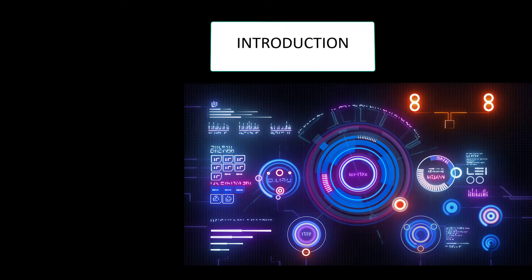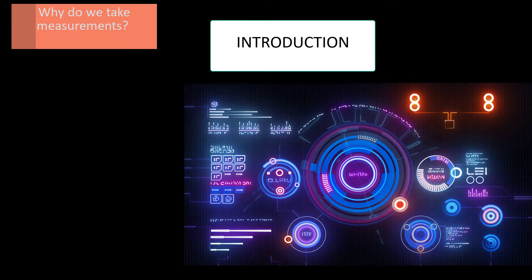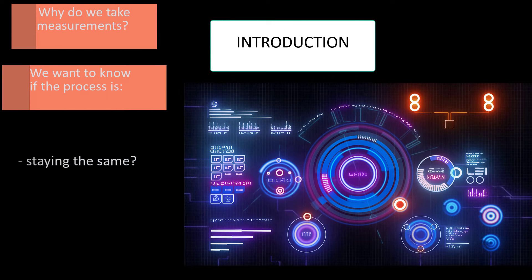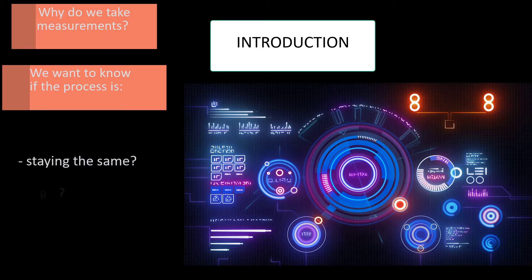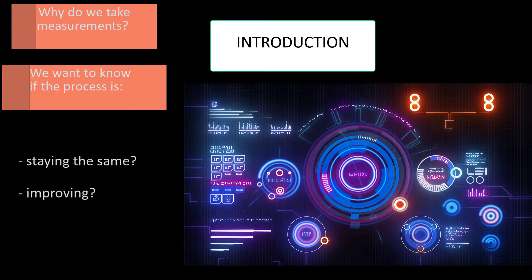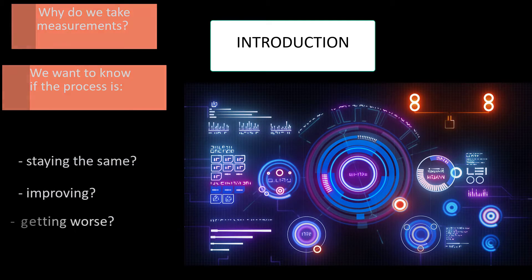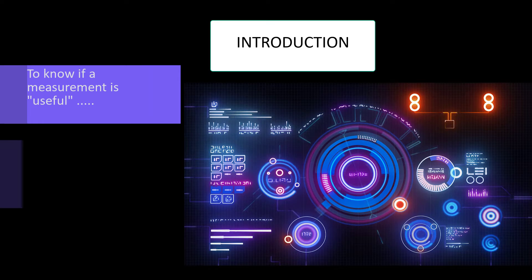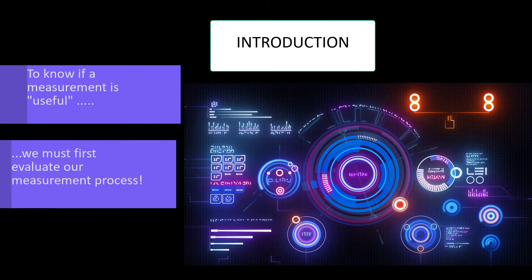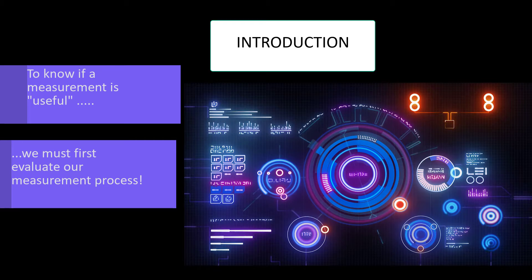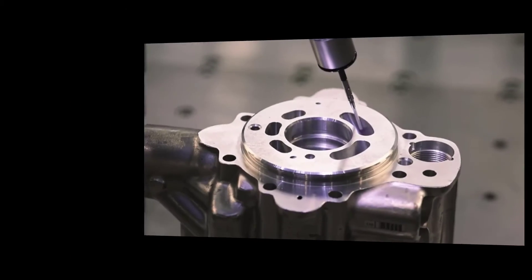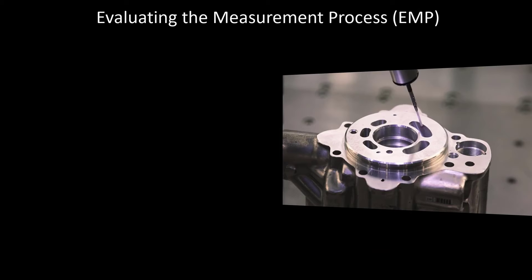This video is going to take a look at one technique for measurement systems analysis. Why do we take measurements? We want to know if the process is staying the same, if it's improving, or if it's getting worse. To know if a measurement is useful, we first have to evaluate our process. There's a series of techniques for evaluating processes called EMP, or Evaluating the Measurement Process.